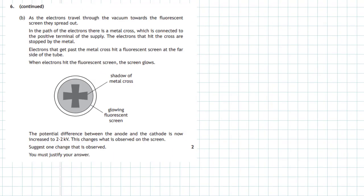As the electrons travel through the vacuum towards the fluorescent screen they spread out. In the path of the electrons there's a metal cross which is connected to the positive terminal of the supply. The electrons that hit the cross are stopped by the metal.